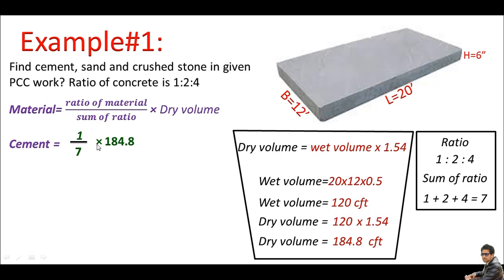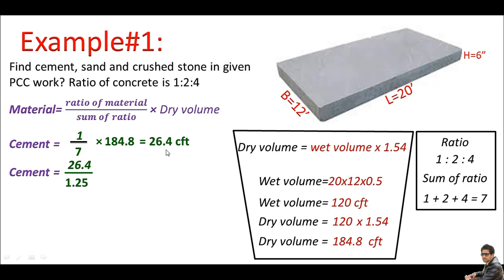Plugging this into the equation: Cement = (1/7) × 184.8 = 26.4 cft. The quantity of cement is always expressed in bags, so we convert by dividing by 1.25 cft (the volume of one cement bag in cft; in cubic meters it is 0.035 m³). So cement = 26.4 / 1.25 = 21 bags.